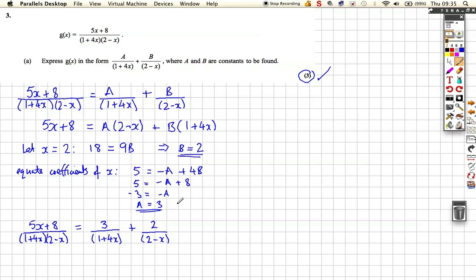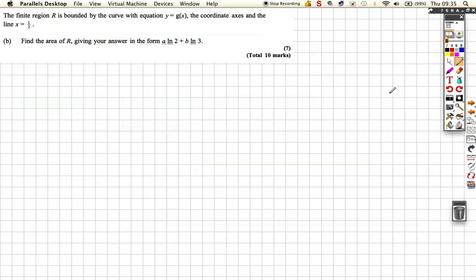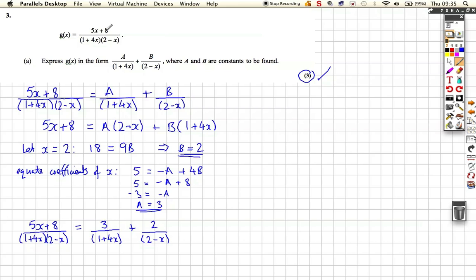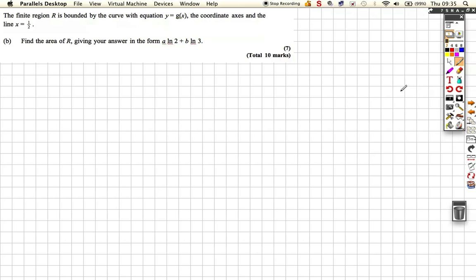We're going to need this on the next part of the question, on part b. Part b says, the finite region r is bounded by the curve with equation y equals g of x, the coordinate axis, and the line x equals a half. So, this was g of x, and we want to find the area of r, so we're going to have to integrate. So, really what we want to do is integrate with x running from 0 to a half, because it's bounded by the y-axis and the x-axis.